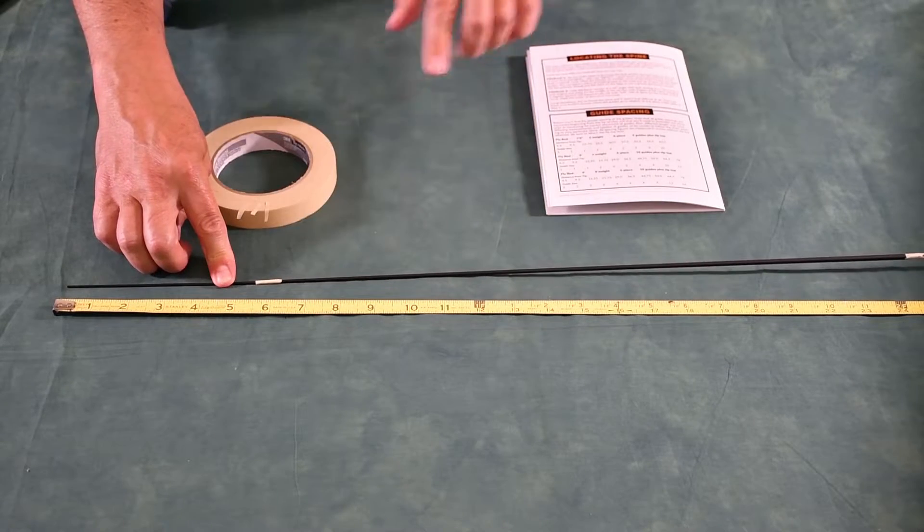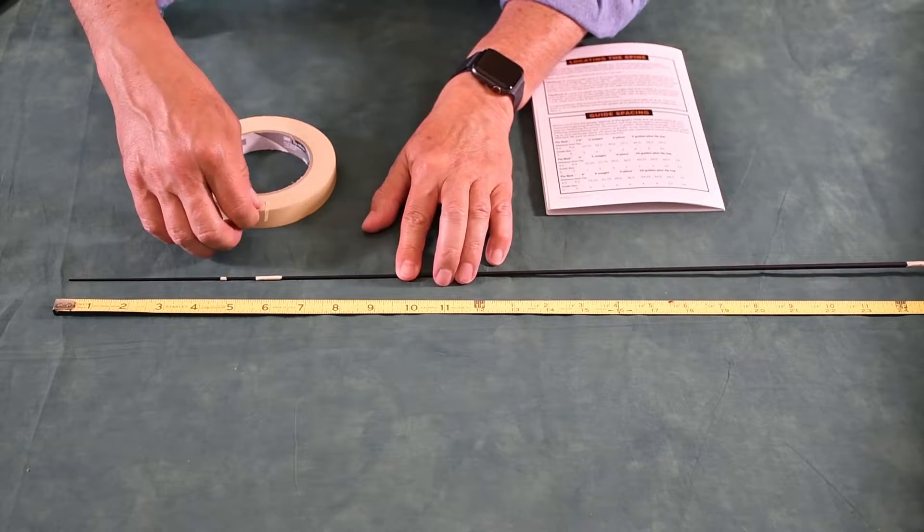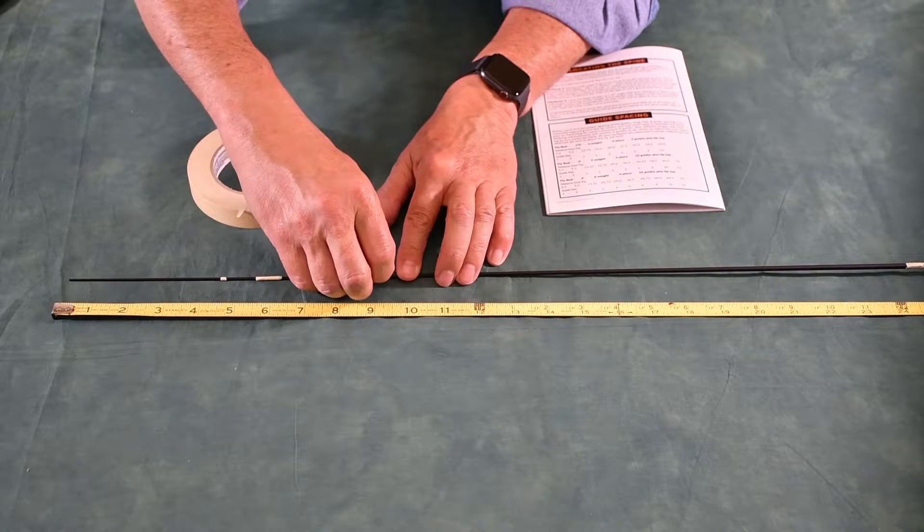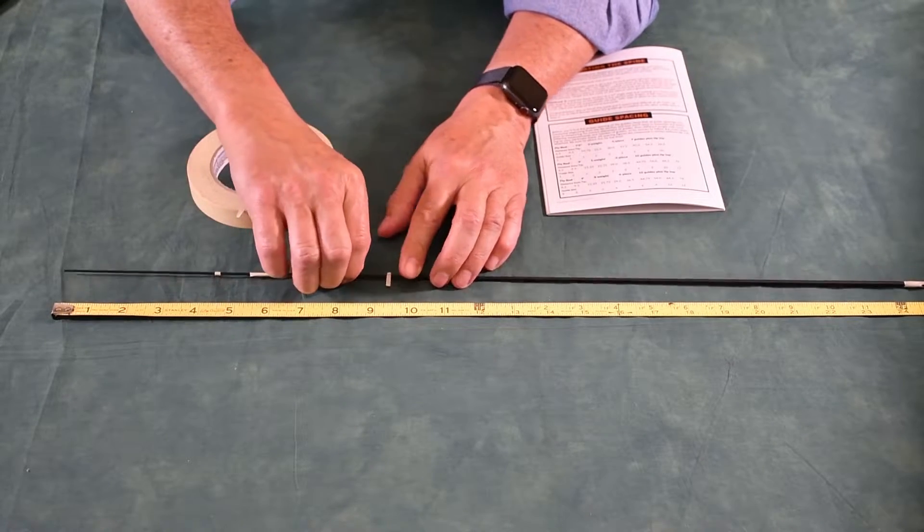Next one goes at 9.5. Again, it's in my spacing chart. I'm going to 9.5 and I'll mark where the second guide goes. Perfect.